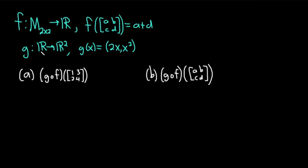And g is a function from the real numbers into the set of all ordered pairs. It takes x and sends it to the ordered pair (2x, x squared). And we have two questions: we have to find g∘f of this matrix here and then likewise here.